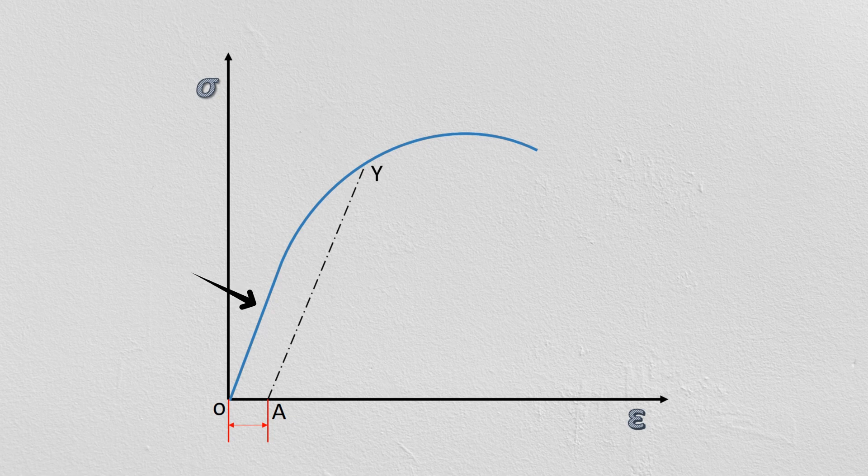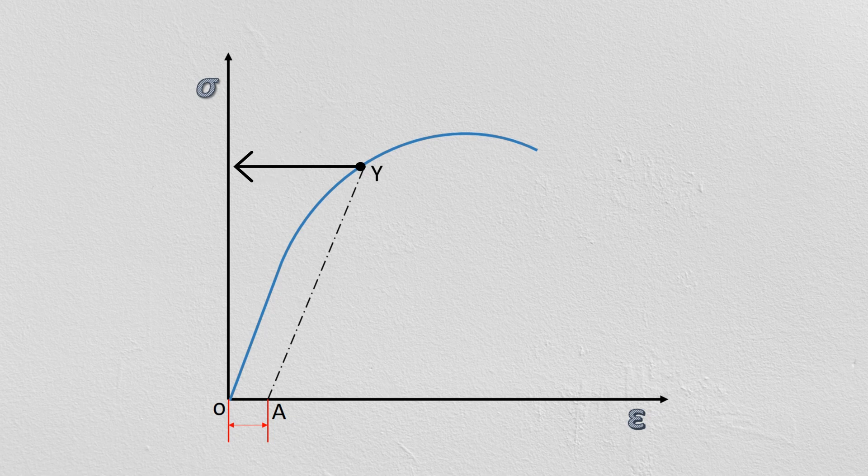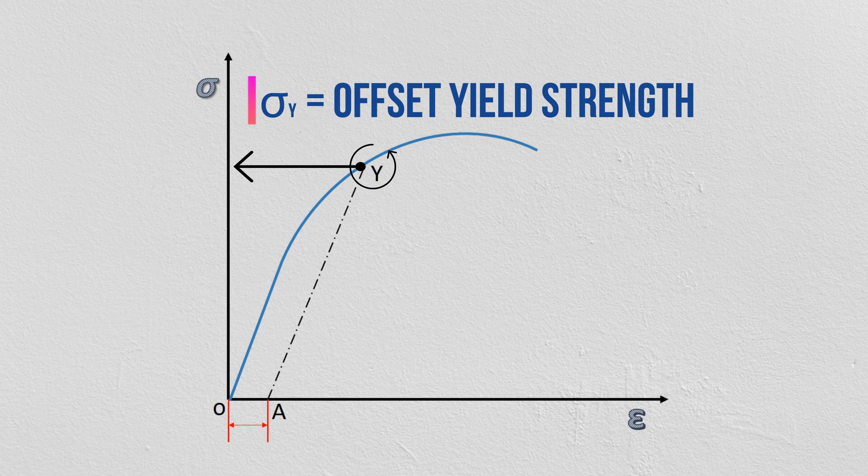The stress value corresponding to point Y is called the offset yield strength or offset yield stress.